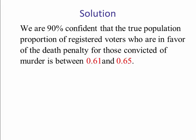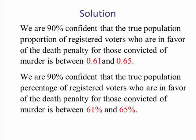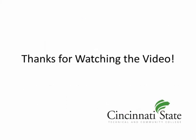So if we go back to our example involving the death penalty, we would say, we are 90% confident that the true population proportion of registered voters who are in favor of the death penalty for those convicted of murder is between 0.61 and 0.65. Another way we can state that, we are 90% confident that the true population percentage of registered voters who are in favor of the death penalty for those convicted of murder is between 61% and 65%. Thanks for watching.